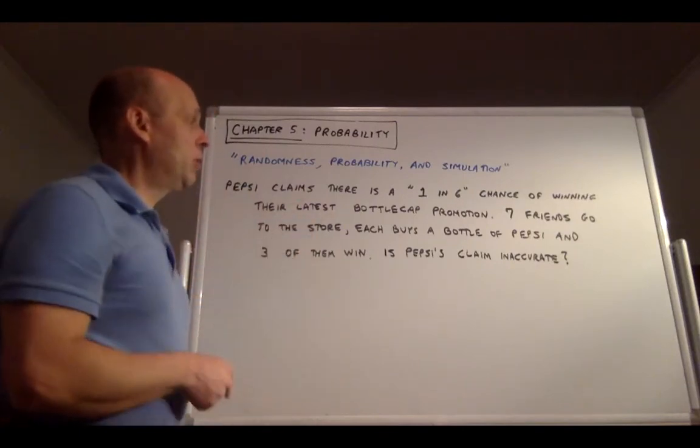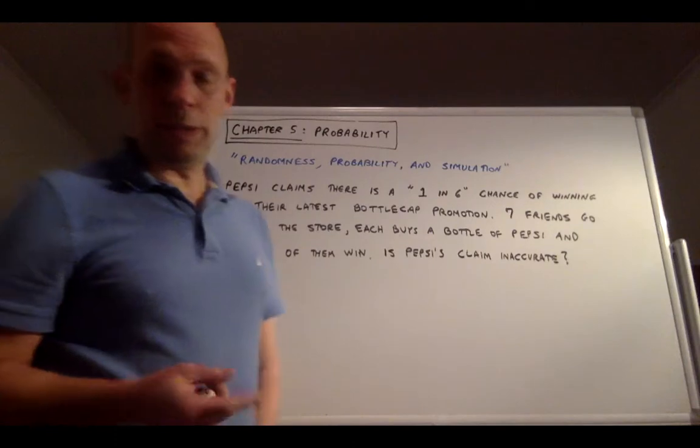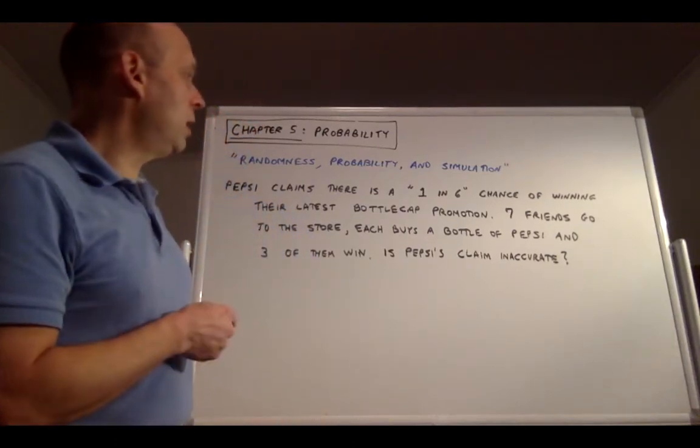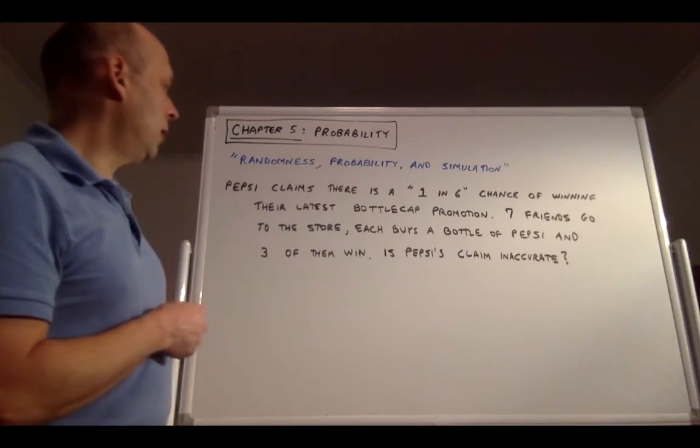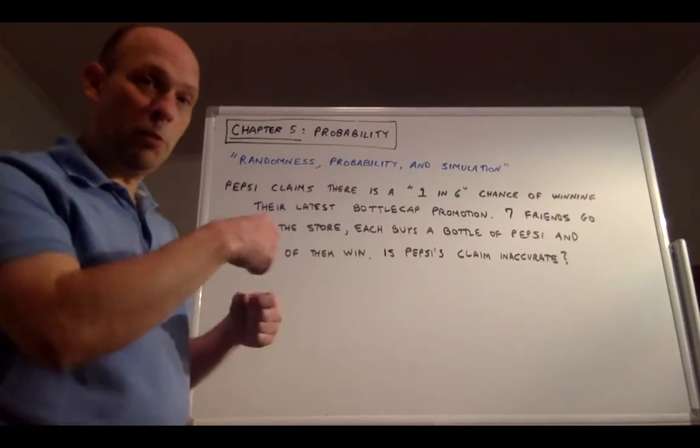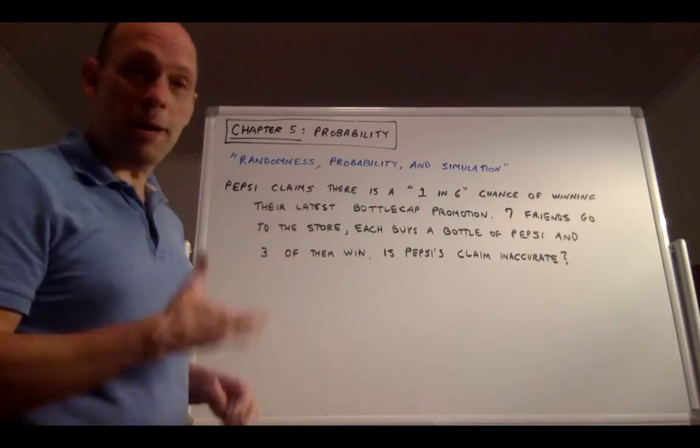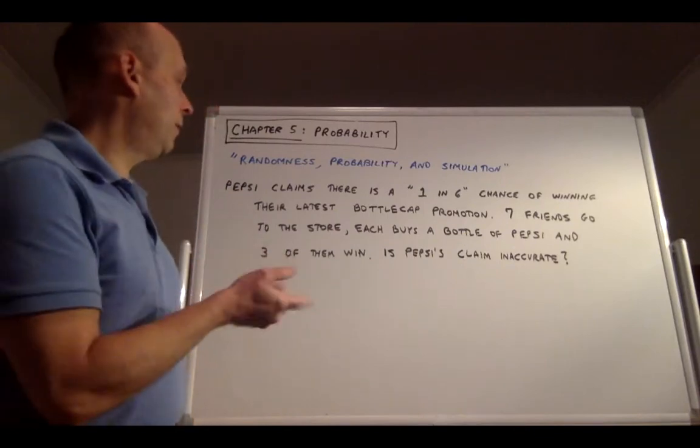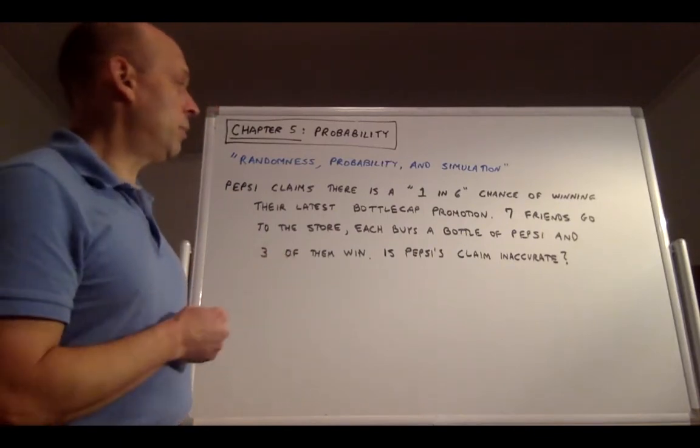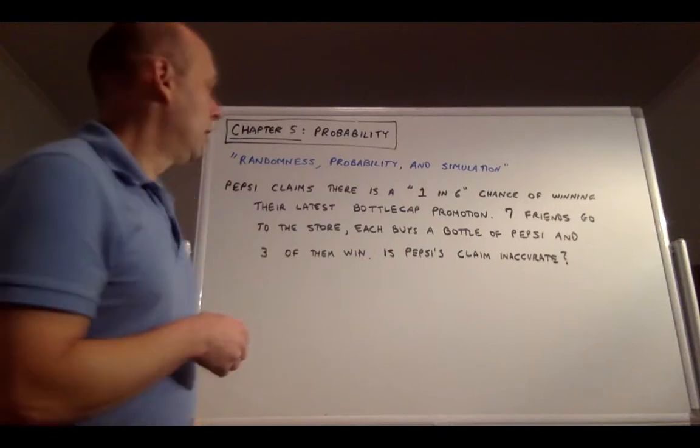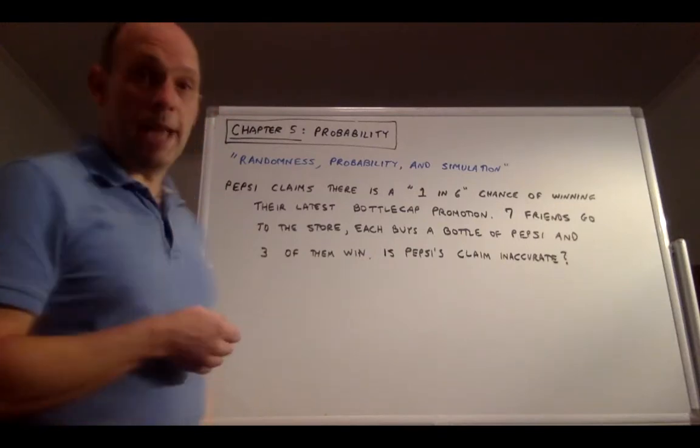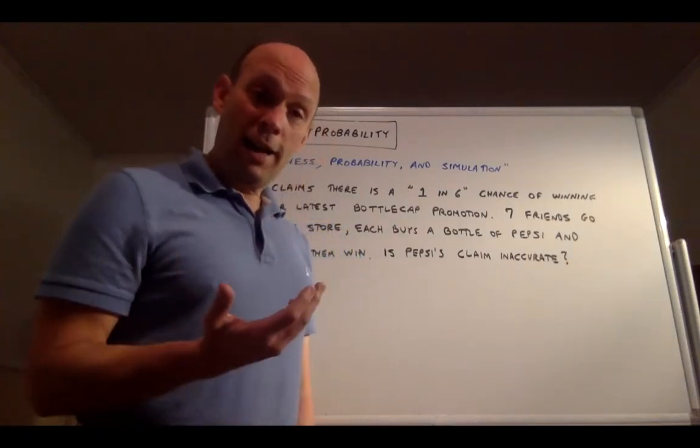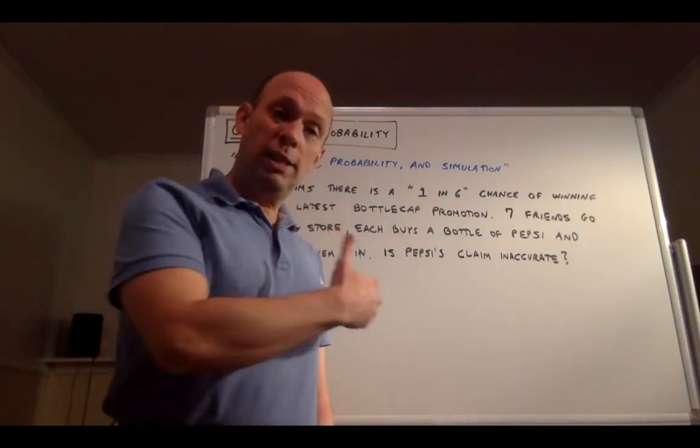We begin by talking about randomness, probability, and simulation. So let's start with this scenario. Pepsi claims there's a 1 in 6 chance of winning their latest bottle cap promotion. So you buy the Pepsi, you open the bottle, you look at the bottle cap, and they say 1 in 6 is a winner. So let's say 7 friends go to the store, each of them buys a bottle of Pepsi, and 3 of them win. The question is, is Pepsi's claim inaccurate? So 3 of them win out of 7. That seems kind of high if there's only a 1 in 6 chance of winning.